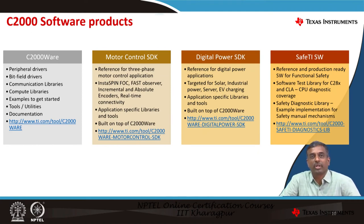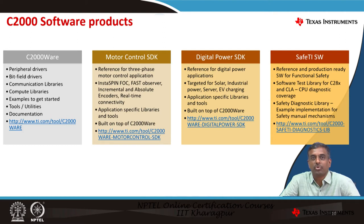Moving on to the software products we support on our device, we have four types of SDKs. First is C2000ware, which provides peripheral drivers, bit-field drivers, communication libraries, compute libraries, examples to get started, tools, and utilities, with significant documentation also available. The motor control SDK is a reference for three-phase motor control applications — it has InstaSPIN, FOC, fast observer, incremental and absolute encoders, and real-time connectivity examples. Several examples built into this SDK allow you to build a control application.